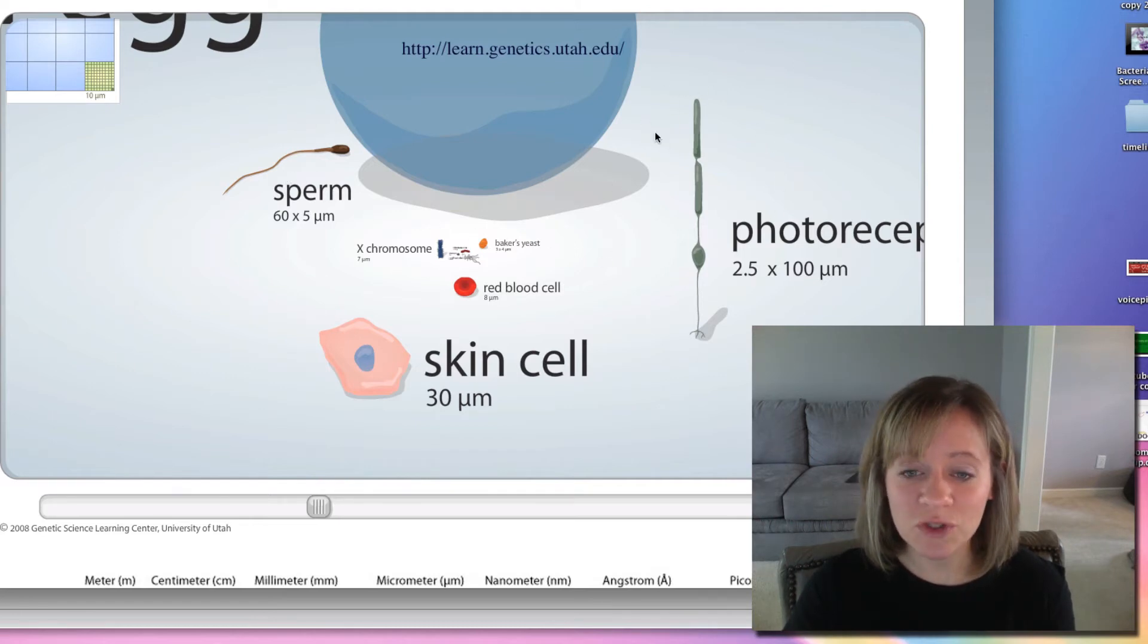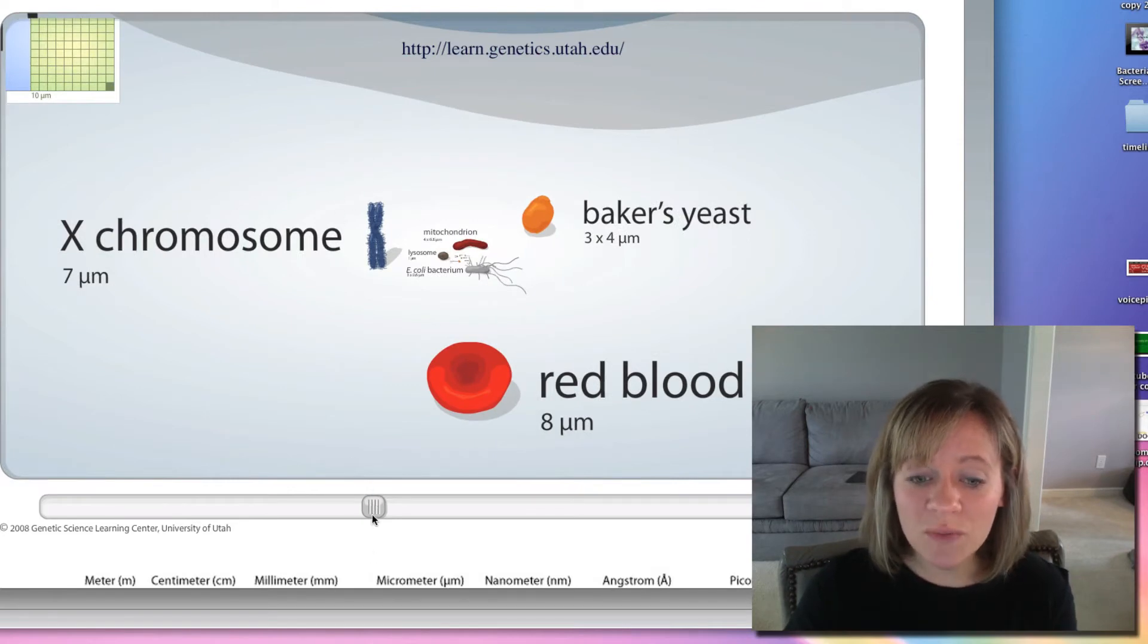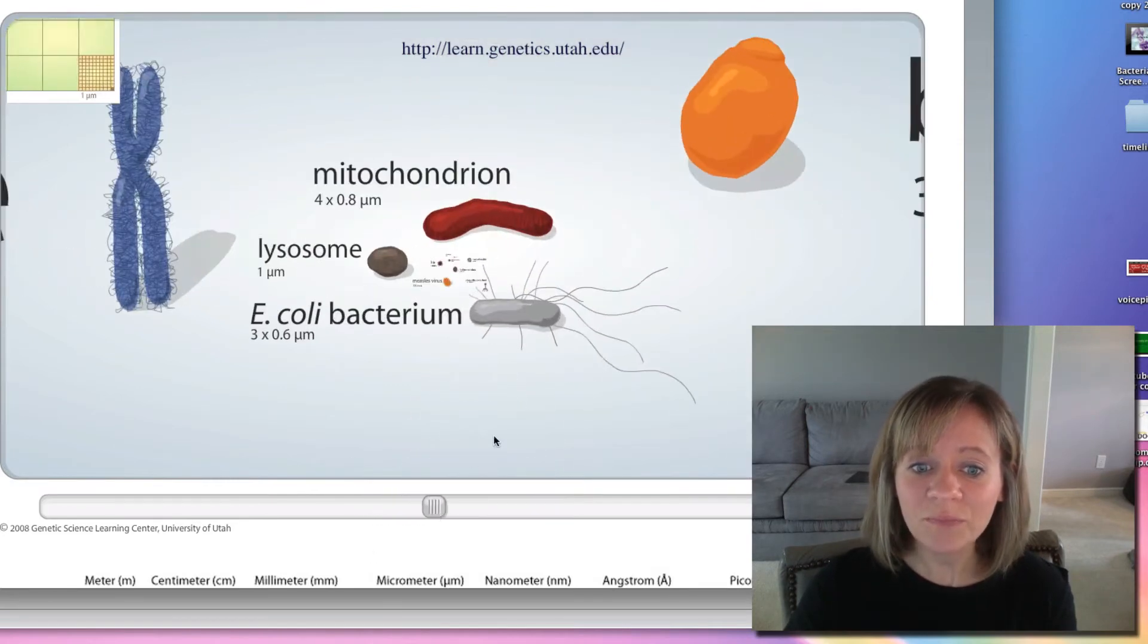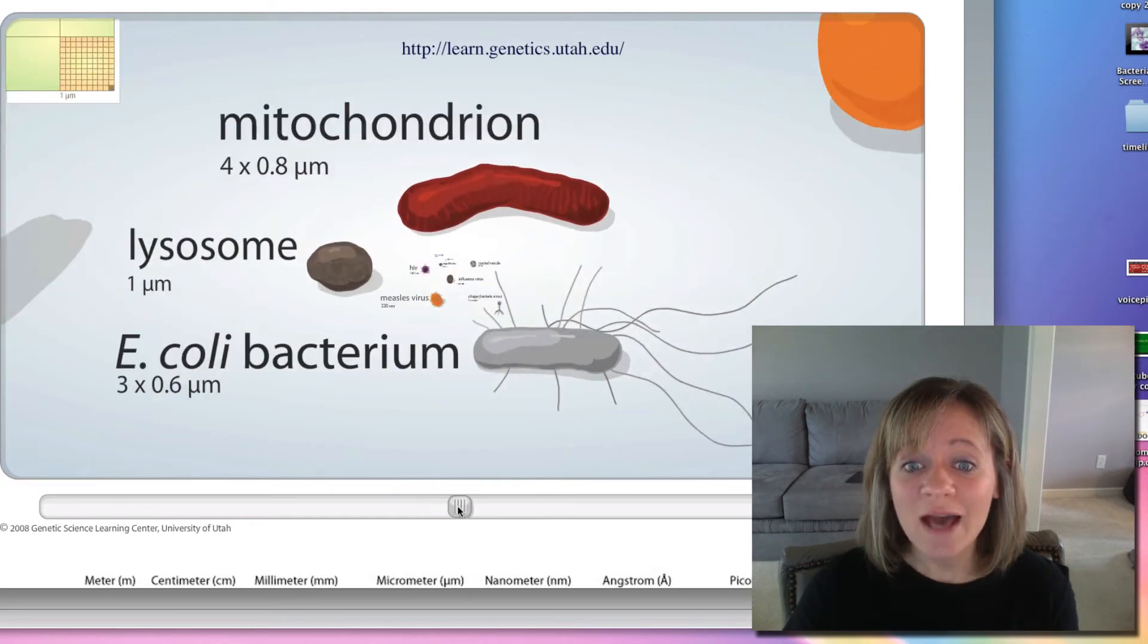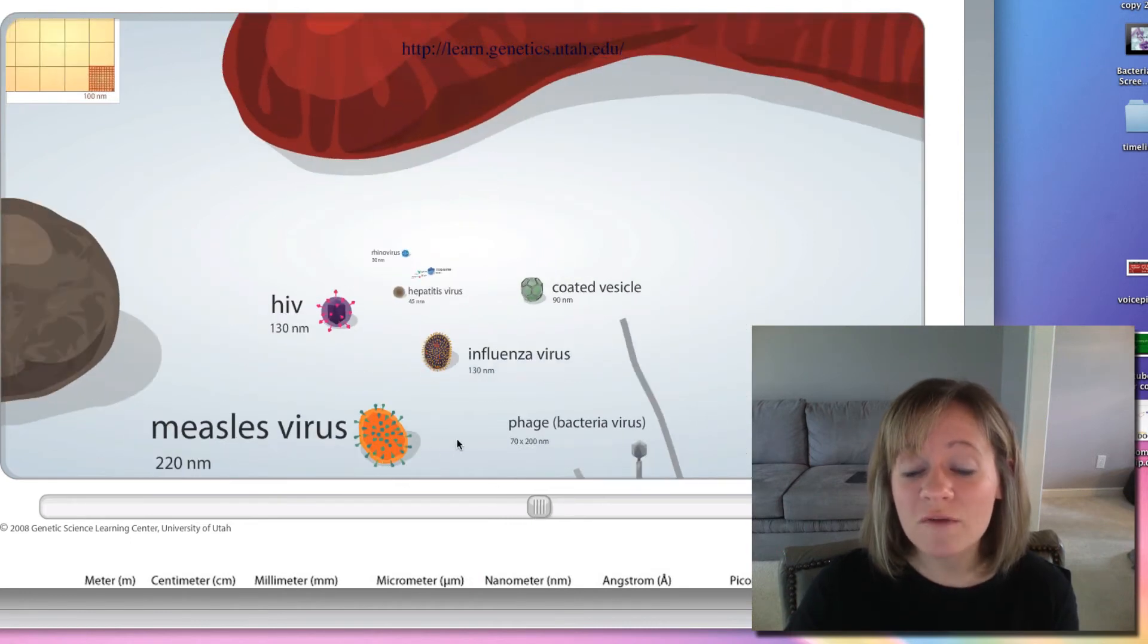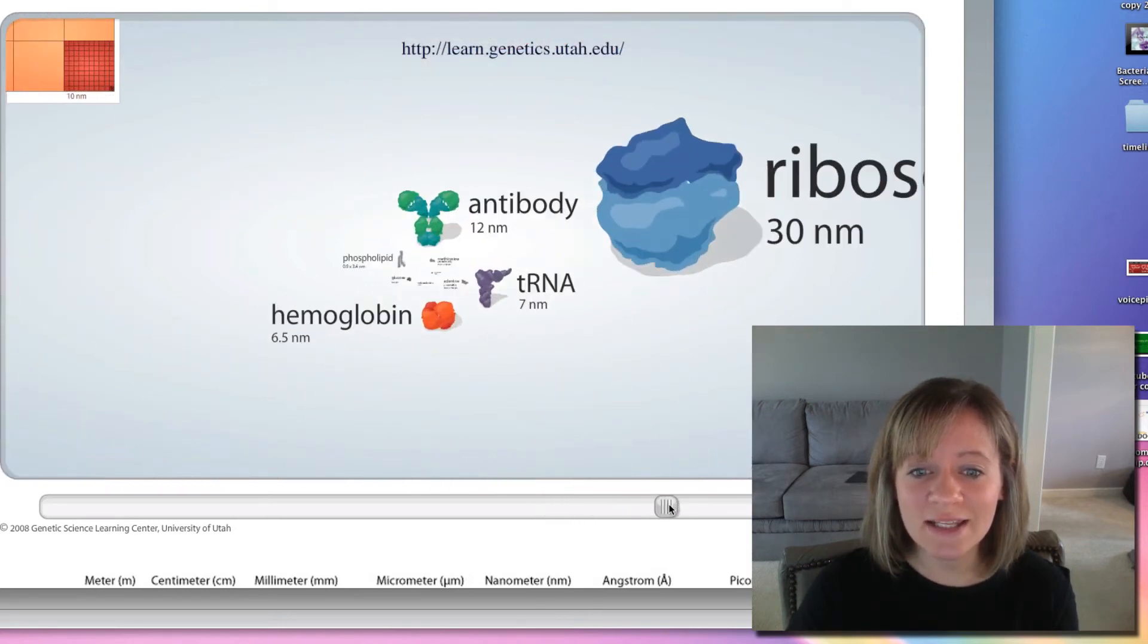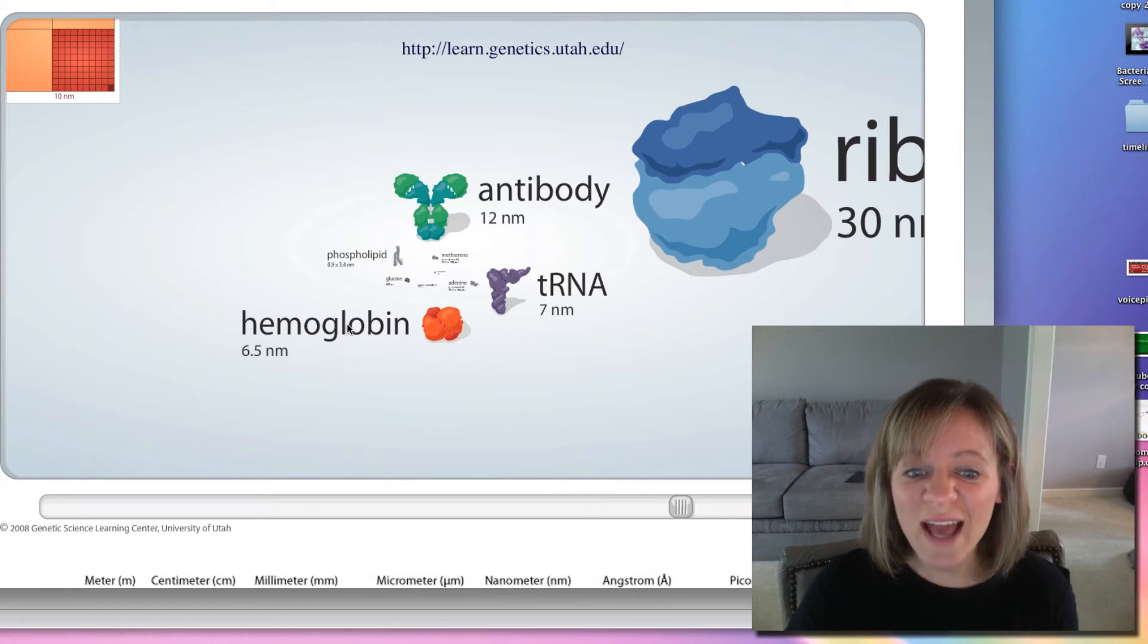And look how small the sperm is in comparison to that. This is a photoreceptor in your eye. This is a skin cell. So a skin cell is even smaller than a human egg. And a red blood cell is even smaller. We get down into our chromosomes are even smaller. A bacteria is even smaller than that. A mitochondria, which is inside of your cells, is even smaller than that. And then finally, we get down to the smallest things, which are viruses. So the measles virus, the HIV.